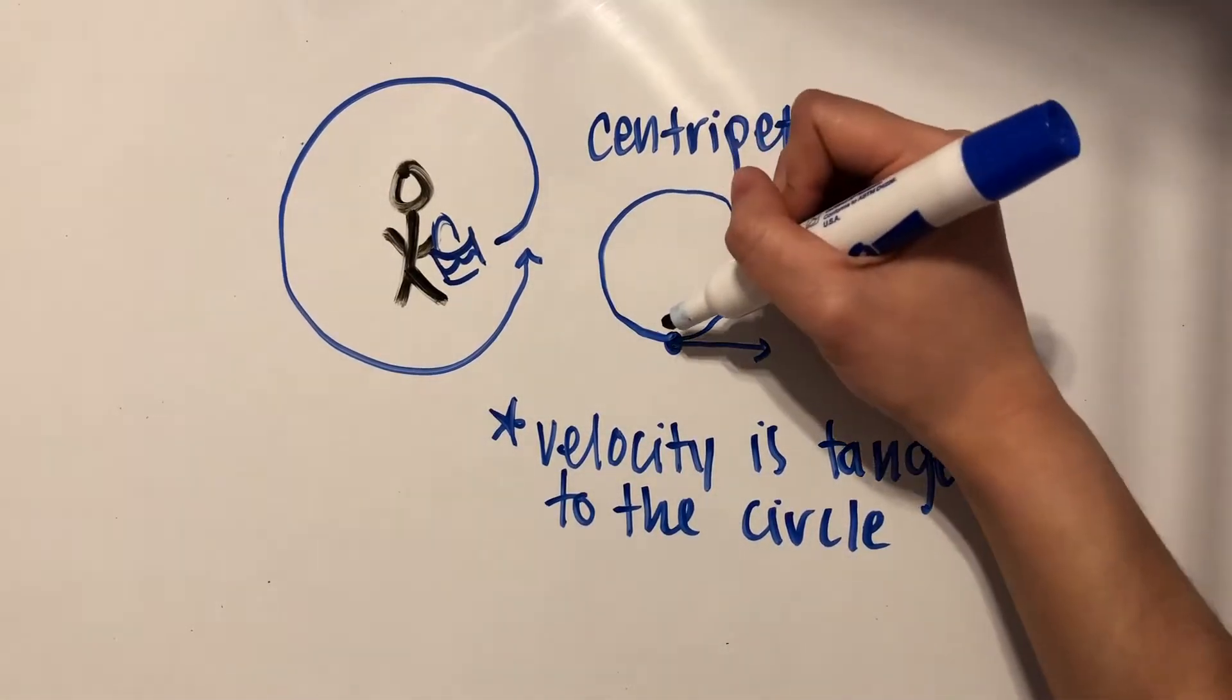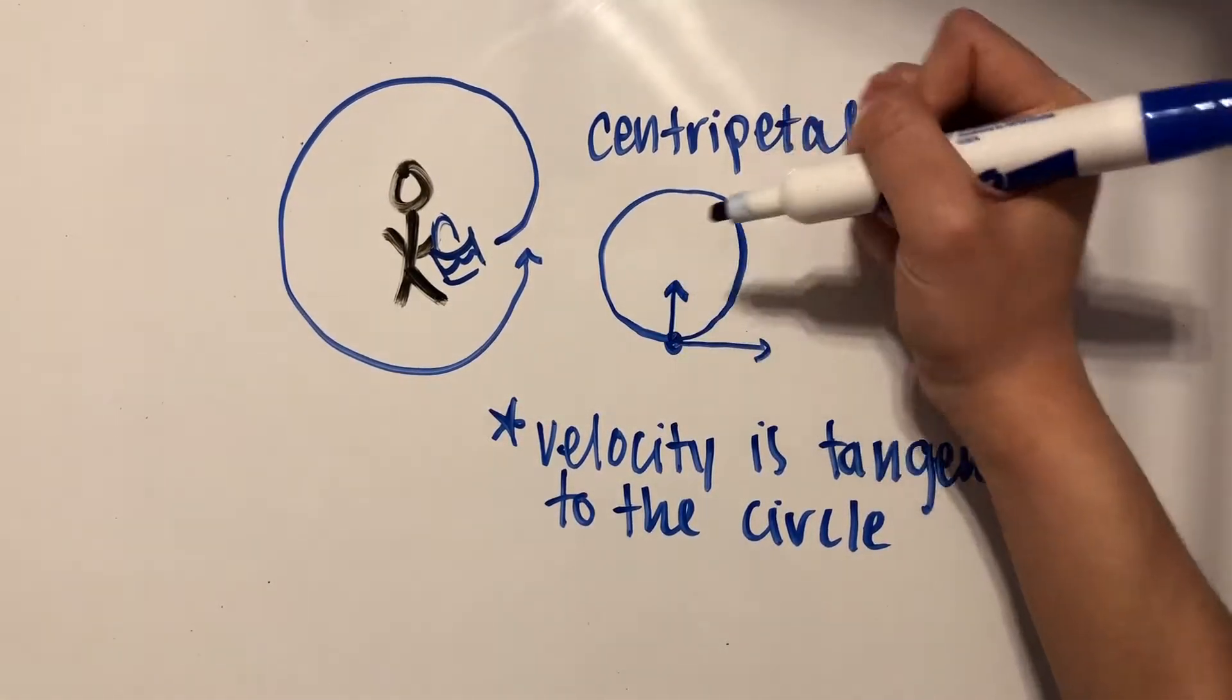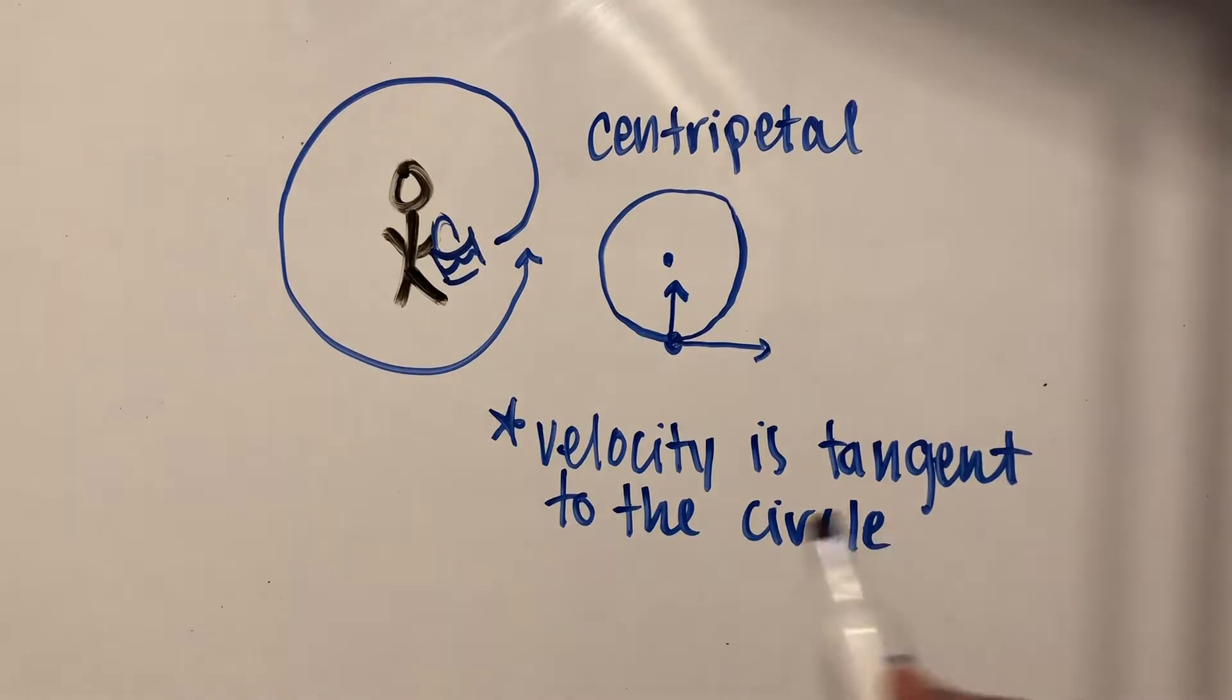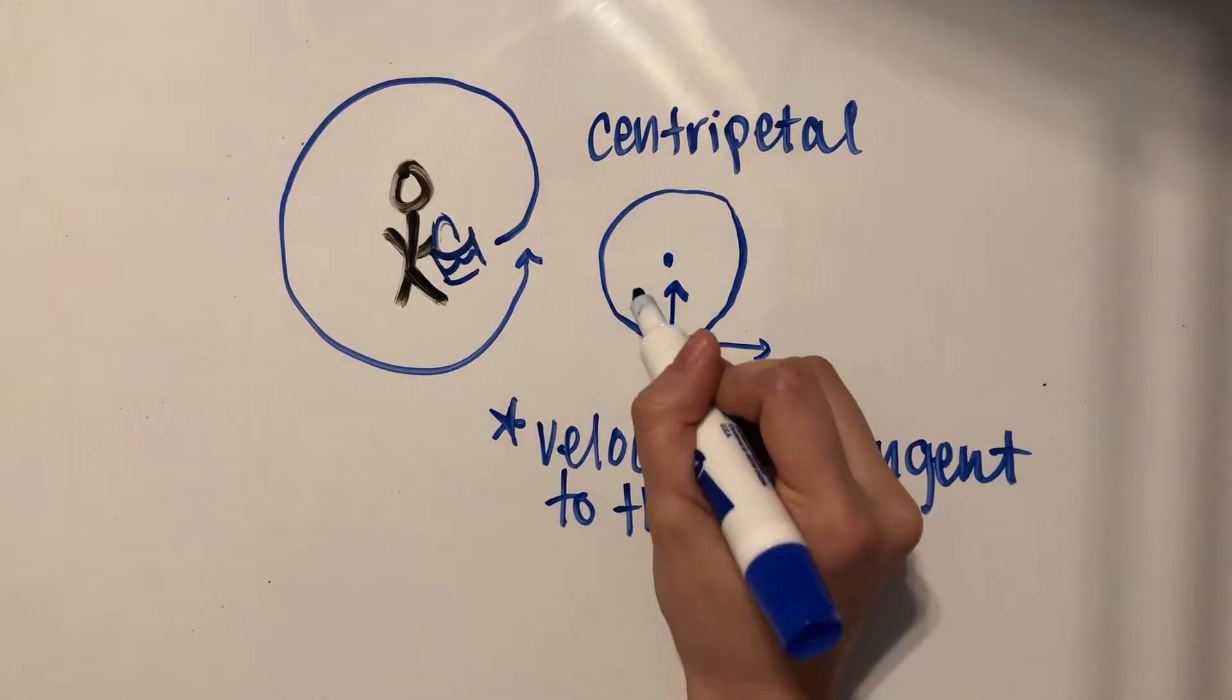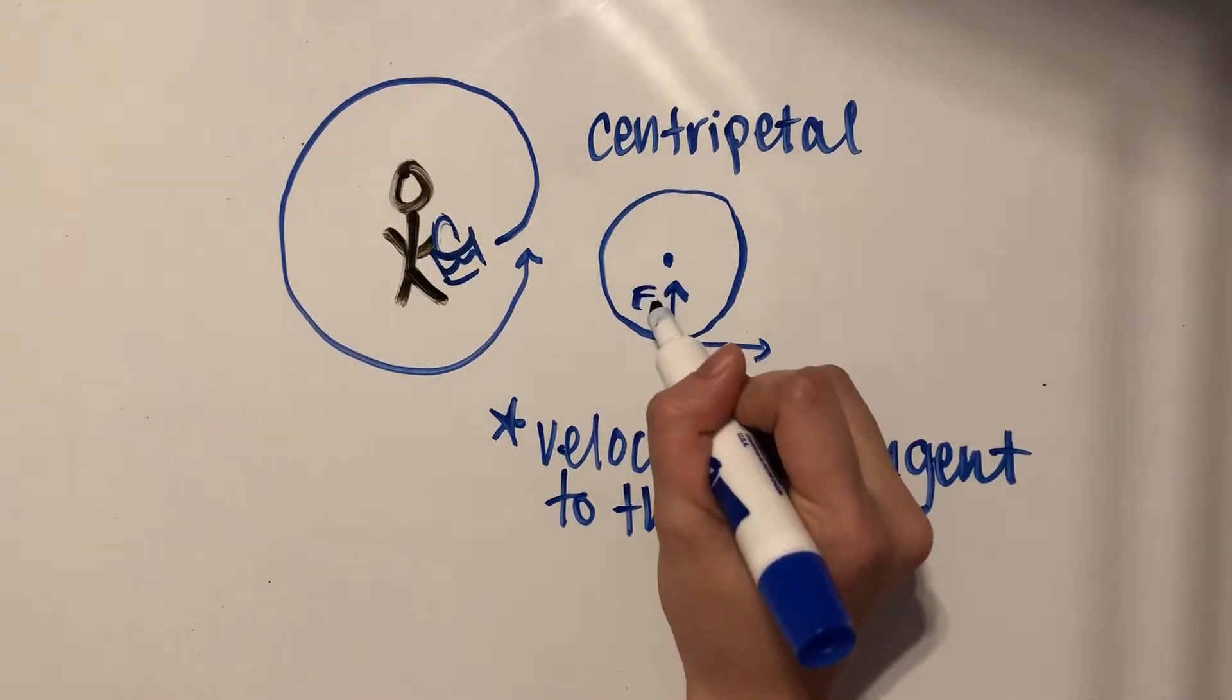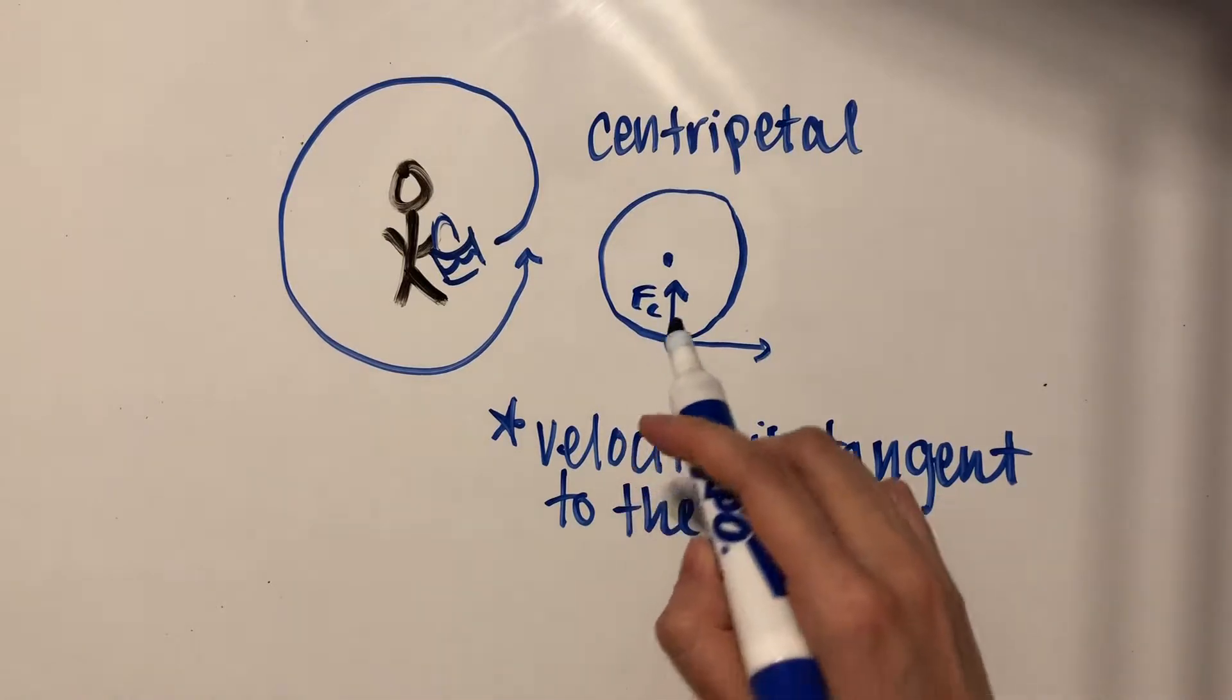The force that he's exerting on it is going to be upwards, which is towards the middle of this circle. This would be denoted as capital F sub C, which is the centripetal force.